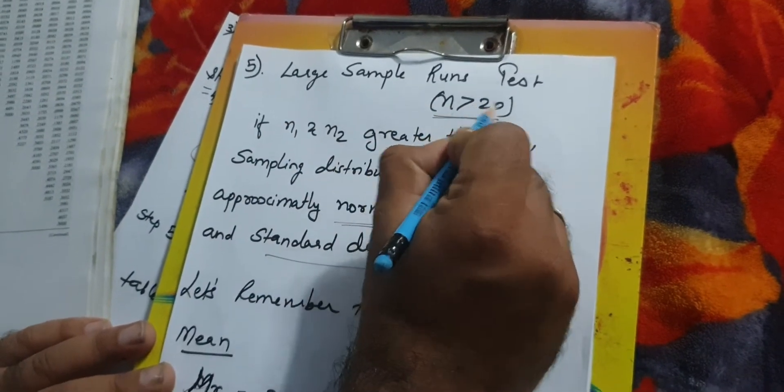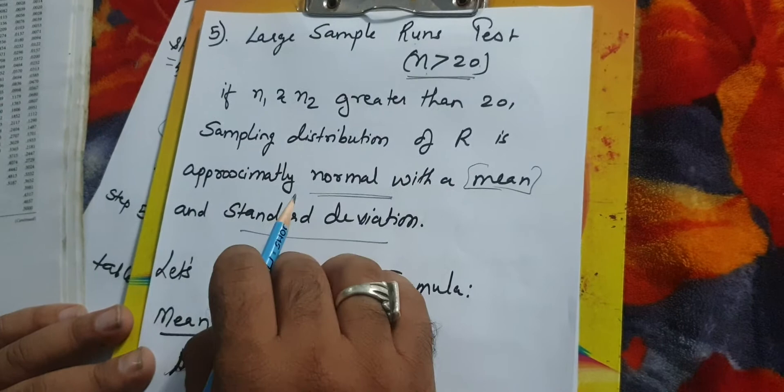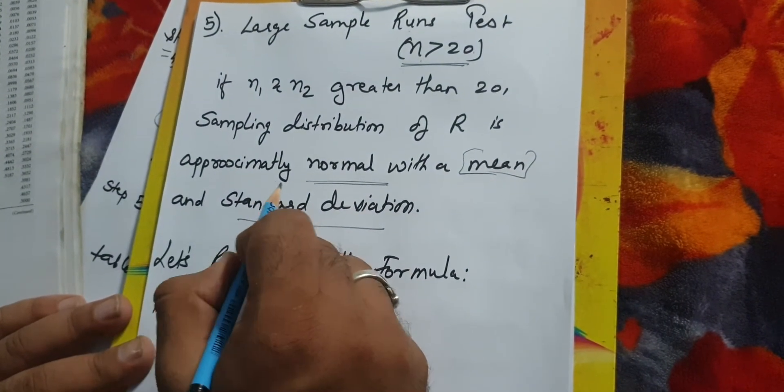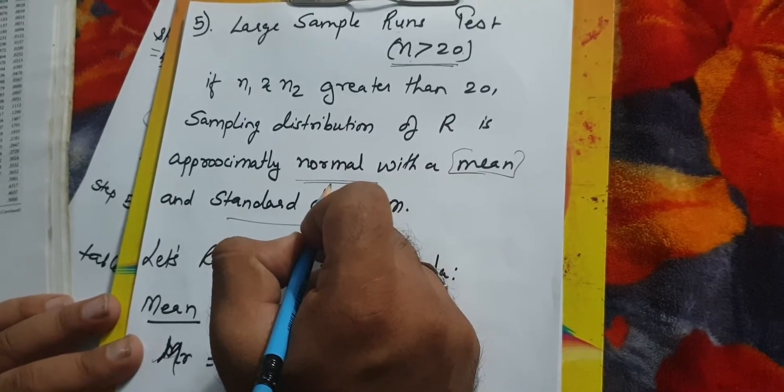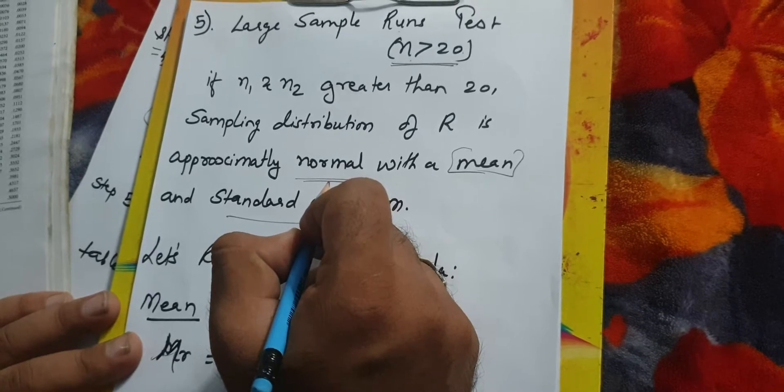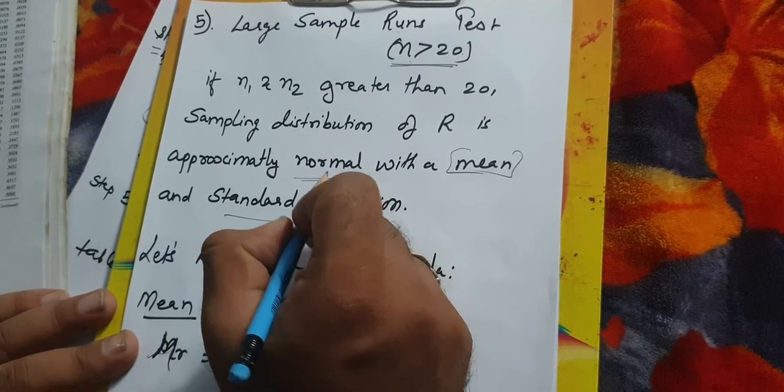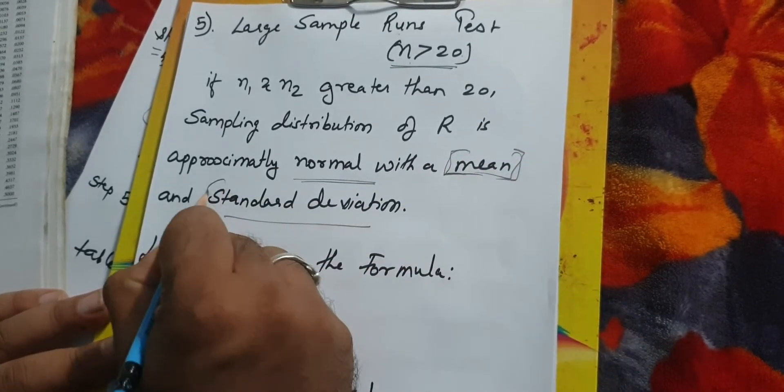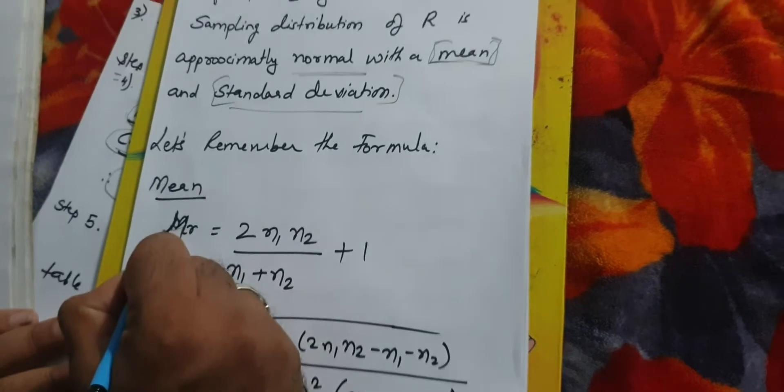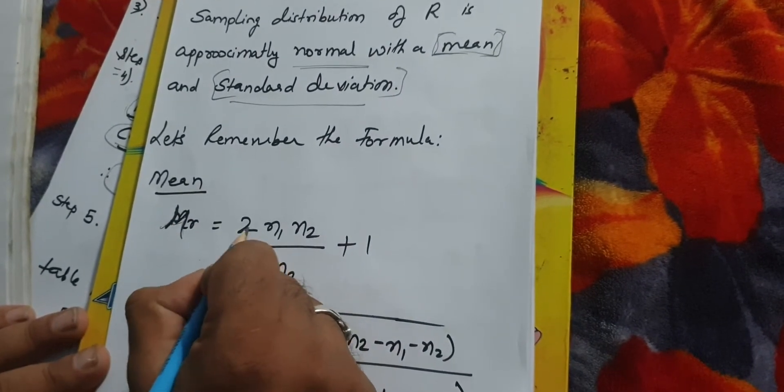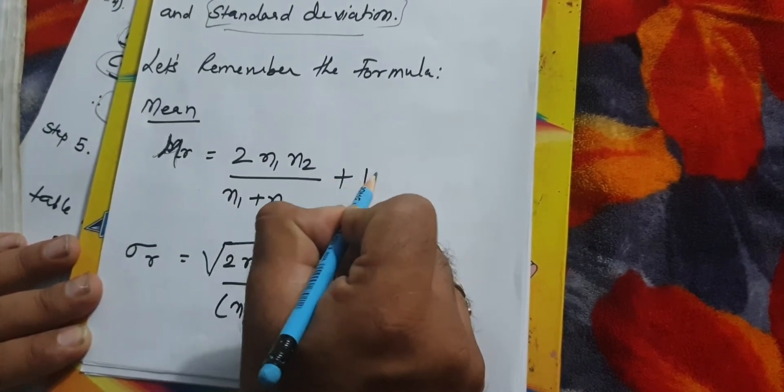Now if N is greater than 20, we need to apply large sample runs test. If sample size increases, it goes with normality or approximates normality. If your size of N is greater than 20, you have to apply large sample runs test. Here you find out the mean and standard deviation with formulas. The formula for mean is 2 times N1 times N2 divided by N1 plus N2, then add 1.